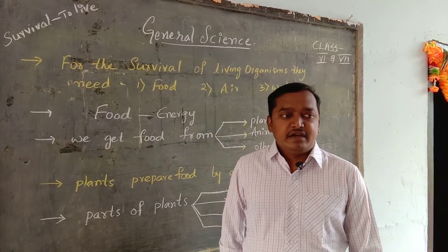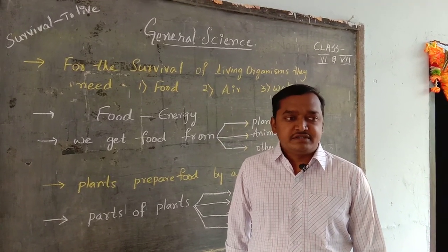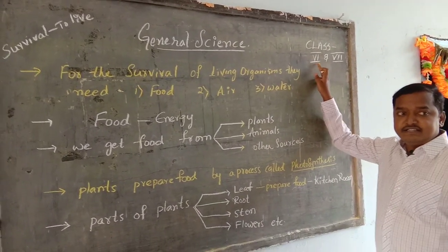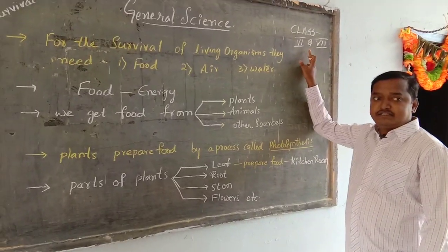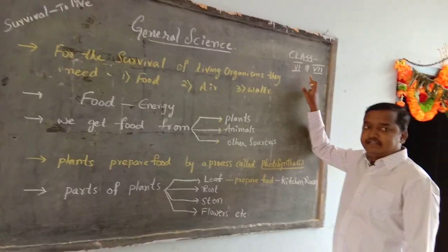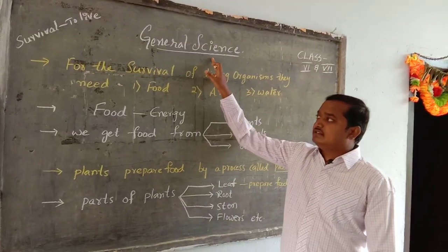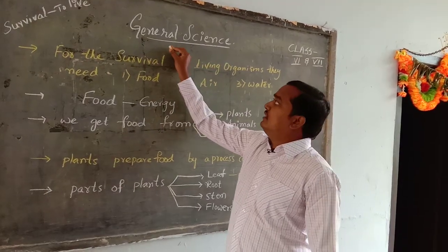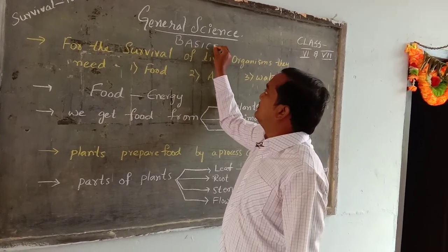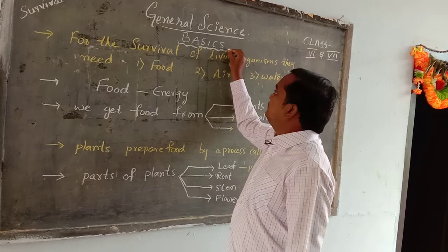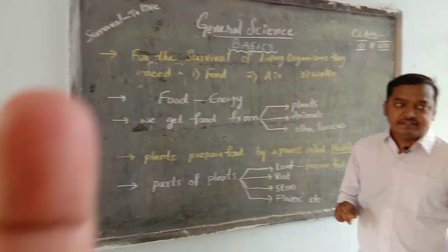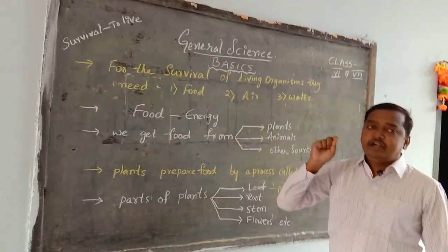So today's class we'll be having a general topic to discuss for classes 6th and 7th. Today's class is for classes 6th and 7th general science, and these are the basic points for these classes. The basic class includes a combined class for 6th and 7th.